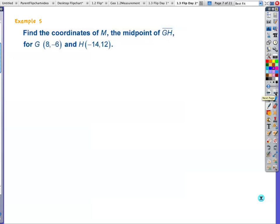Find the coordinates of M, the midpoint of segment GH, for G, which is at (8, -6), and H, which is at (-14, 12). I'm going to have you do this one, and we can talk about this one in class. So example 5. Write down those numbers. Work it out on your own. We'll do kind of a quick check or something like it in class.